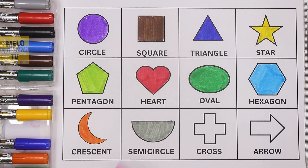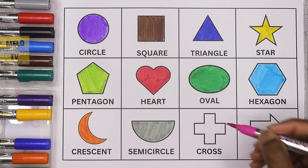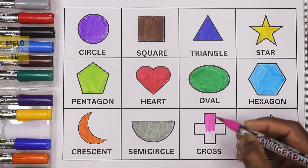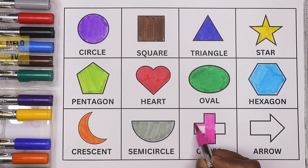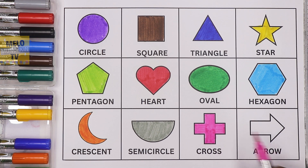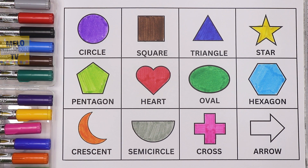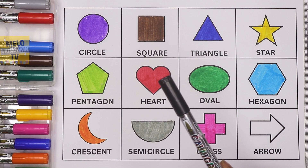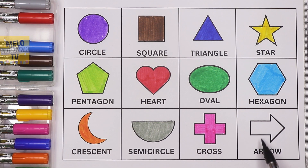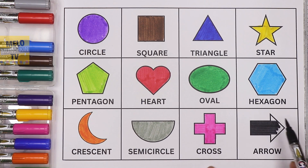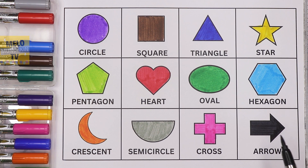Next I'll take pink color to color this shape. This is a cross. So now it is a pink cross. And finally I'll take black color to color this shape. This is an arrow. So now it is a black arrow. Let's repeat once again — first the shape and then the colors.